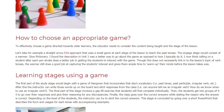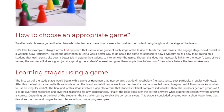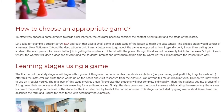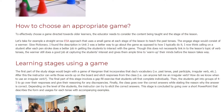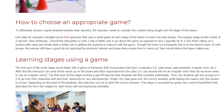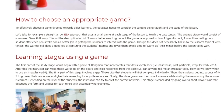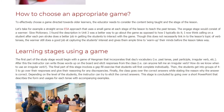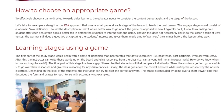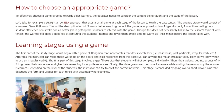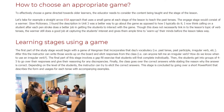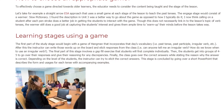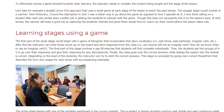After this, the instructor can write those words up on the board and elicit responses from the class — for example, can anyone tell me an irregular verb? How do we know when to use an irregular verb? The final part of this stage involves a gap fill exercise that students will first complete individually. Then the students get into groups of 4 or 5 to go over their responses and give their reasoning for any discrepancies. Finally, the class goes over the correct answers, stating the reason why each answer is correct. Depending on the level of the students, the instructor can try to elicit the correct answers. This stage is concluded by going over a short PowerPoint that describes the form and usages for each tense with accompanying examples.